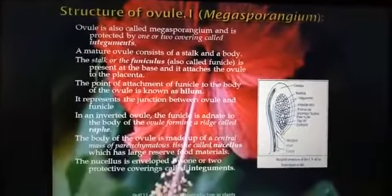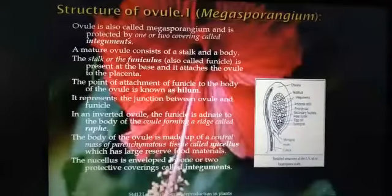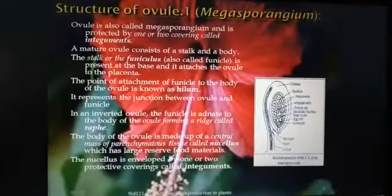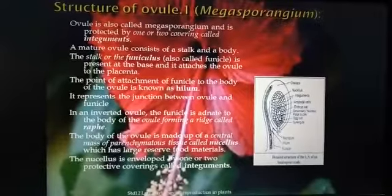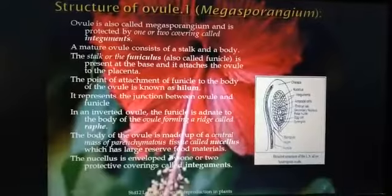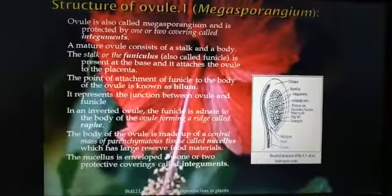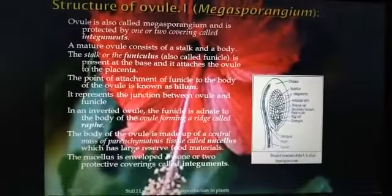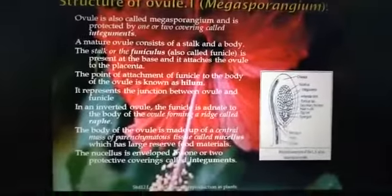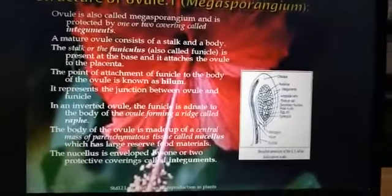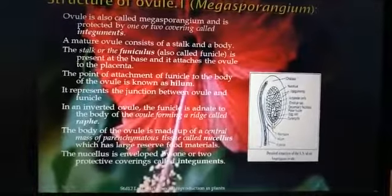The body of the ovule is made up of a central mass of parenchymatous tissue called the nucellus. The nucellus looks like a bag and contains homogenous parenchymatous tissue. This nucellus surrounds the embryo sac which is located at the center.